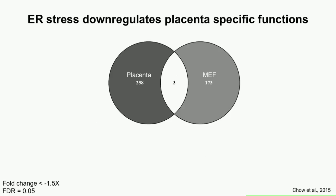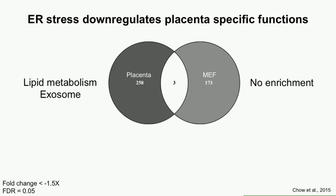To emphasize how important tissue-specific responses are: when we compared downregulated genes in the placenta to the MEF dataset, we found almost no overlap between the two tissues — really indicating a very strong tissue-specific response to this stress. The MEFs showed no enrichment for any particular function in their downregulated genes, whereas the placenta's downregulated genes are strongly enriched for lipid metabolism and exosome function.